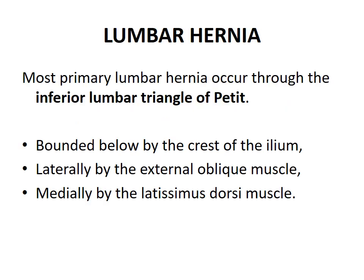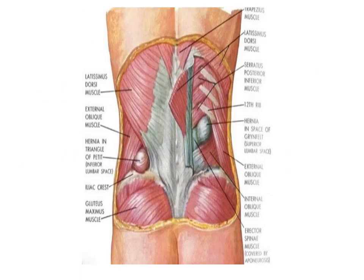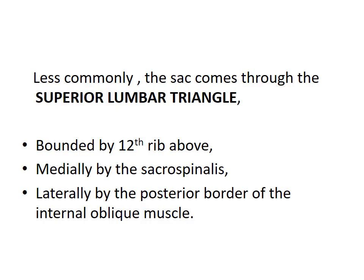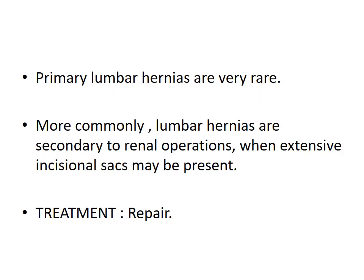Lumbar hernia: most primary lumbar hernias occur through the inferior lumbar triangle of Petit, bounded below by the crest of the ilium, laterally by the external oblique muscle, and medially by the latissimus dorsi muscle. The sac may also come through the superior lumbar triangle, bounded by the twelfth rib above, medially by the sacrospinalis, and laterally by the posterior border of the internal oblique muscle. Lumbar hernias are very rare; more commonly they are secondary to renal operations. Treatment is surgical repair.